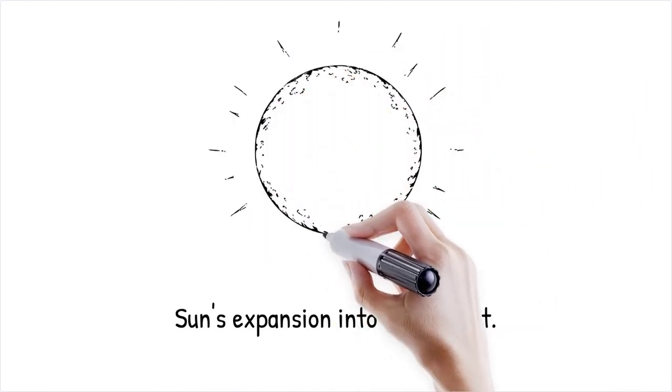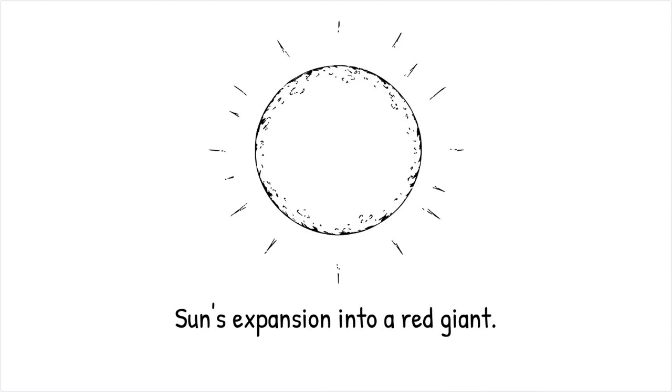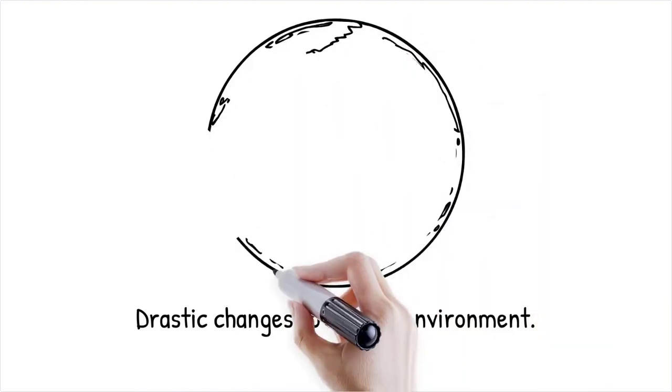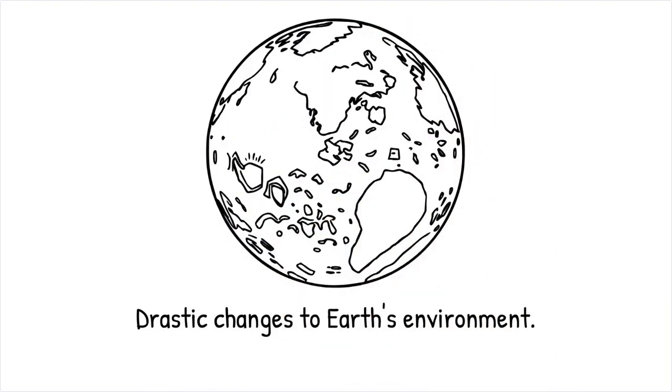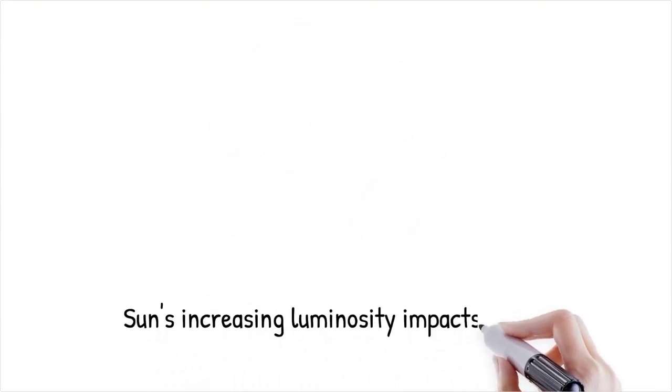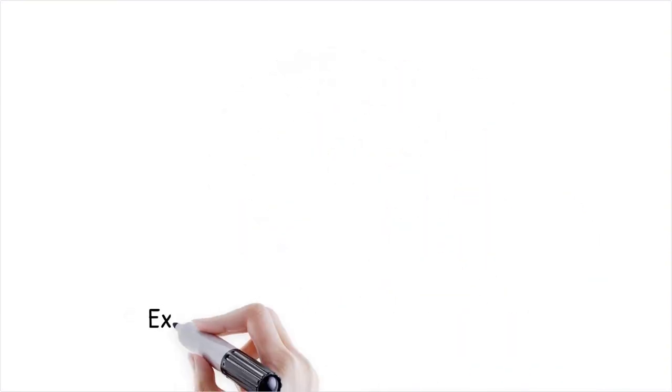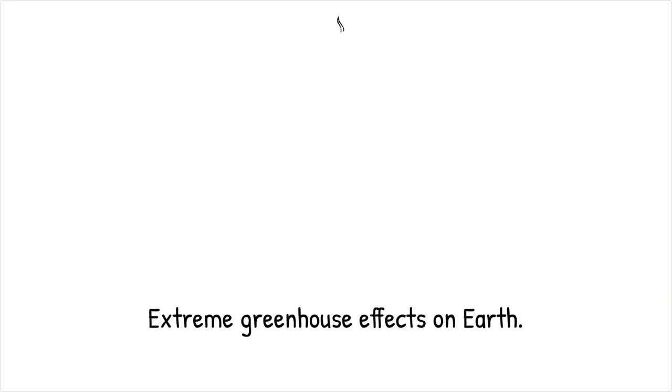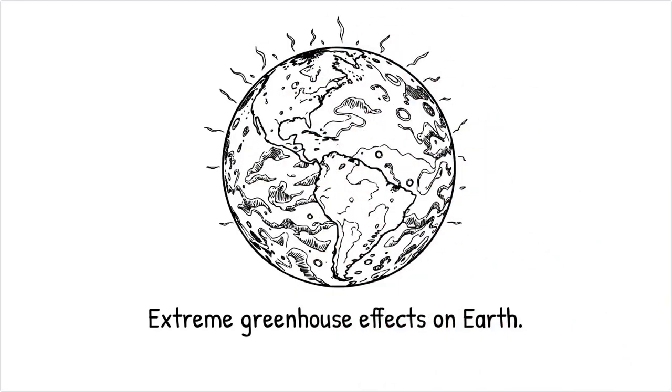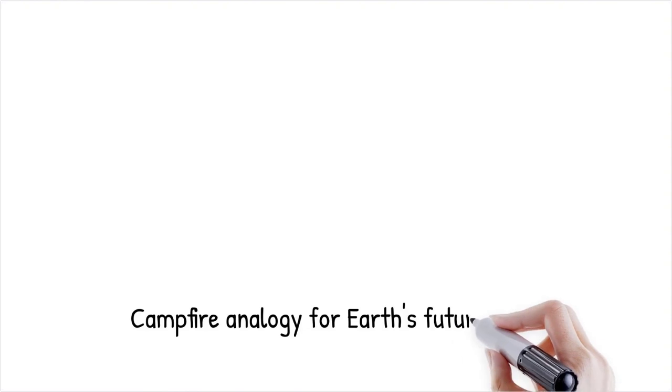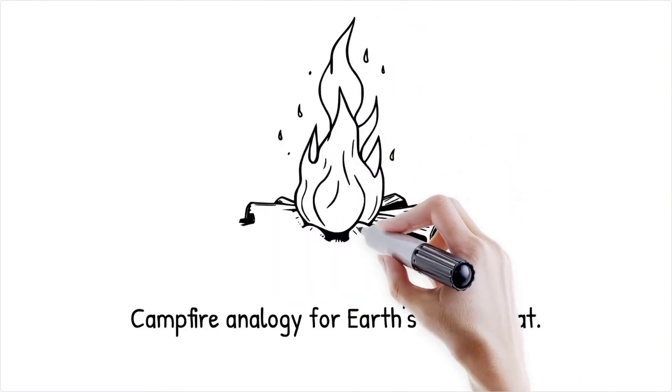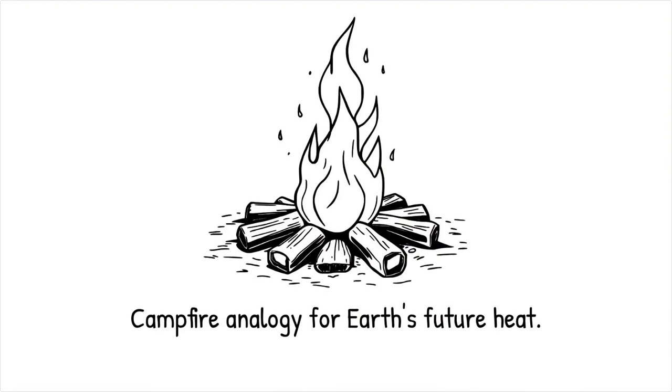As the sun ages, it will expand into a red giant, increasing in size until its outer layers extend past Earth's current orbit. At this point, Earth's surface temperatures will rise drastically, causing the oceans to evaporate and the atmosphere to be stripped away. Long before this happens, the sun's increasing luminosity will make Earth uninhabitable within the next one to two billion years. Astronomical models predict that by one billion years from now, Earth will experience extreme greenhouse effects causing surface temperatures to exceed 100 degrees Celsius, boiling away the oceans. This is like a campfire getting gradually hotter. The closer you are, the more unbearable the heat becomes until it is impossible to stay near it.